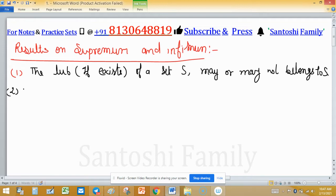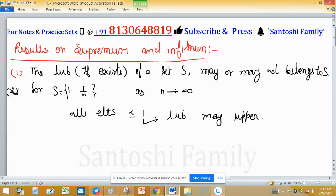For example, 1 minus 1 upon n, suppose this is S. As n tends to infinity, all elements less than or equal to 1.